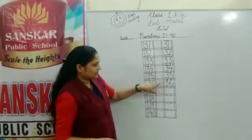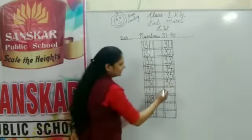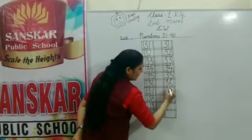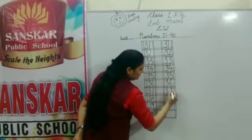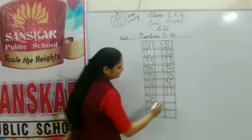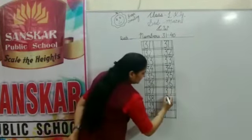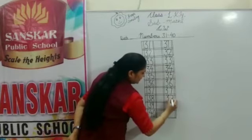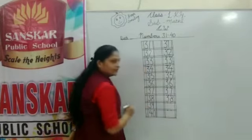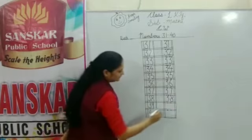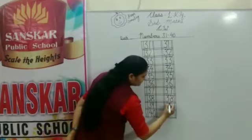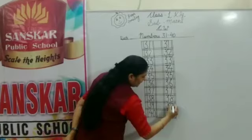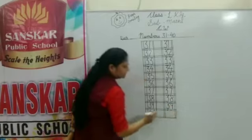And after 36, write down 3, 7 — 37. Next, please write down 3, 8 — 38. Aapko kya karna hai? Write down 3, 9 — 39.